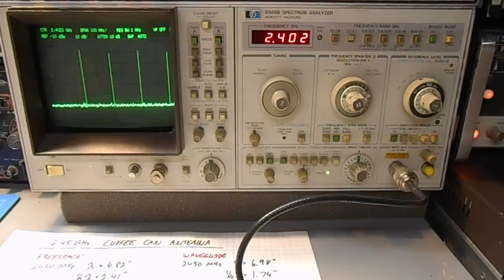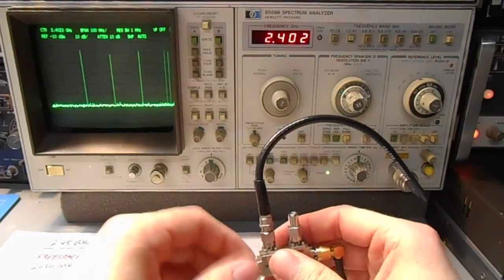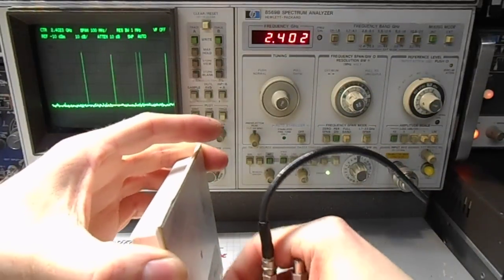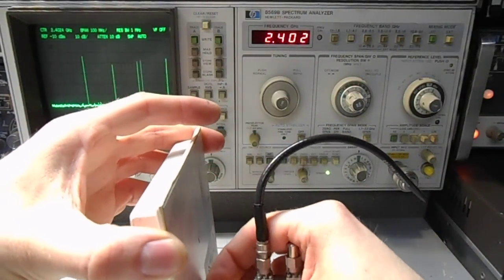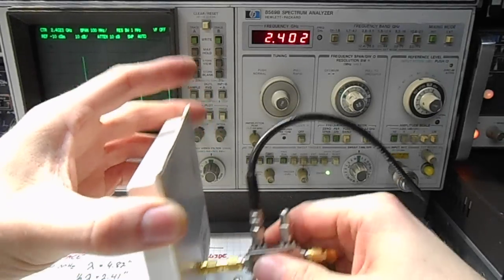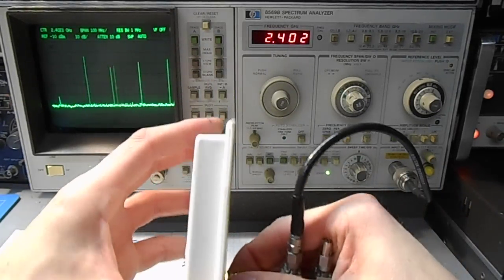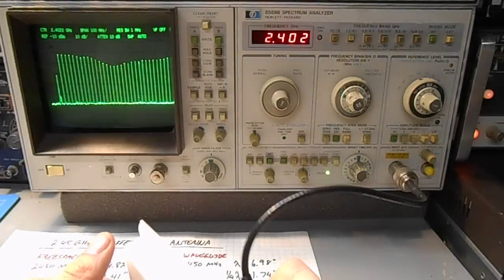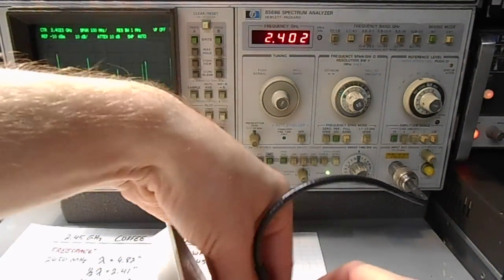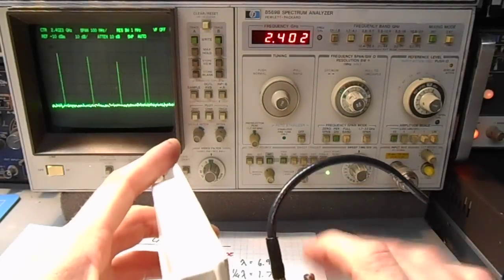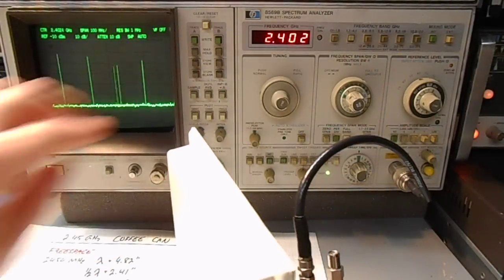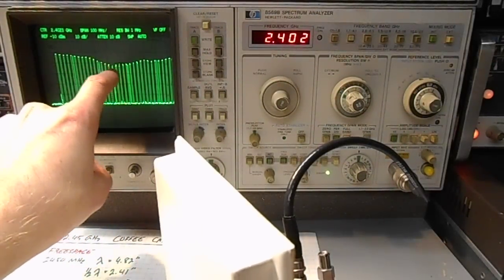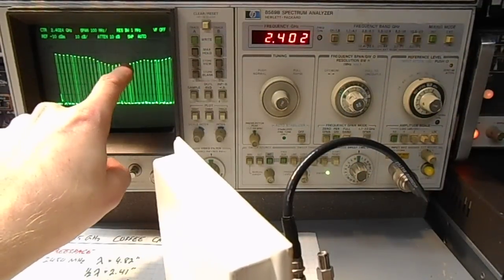I have a commercial patch antenna just to show you what kind of example of what we're going to do. This patch antenna is designed for the 2.4 GHz ISM band. As you can see from our center, 2.4 GHz, we've got a nice dip in the 2.45 GHz band right here.